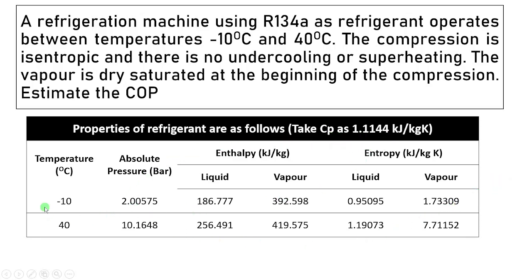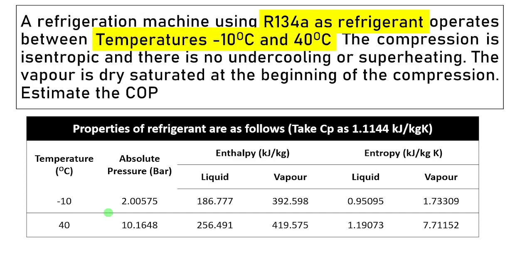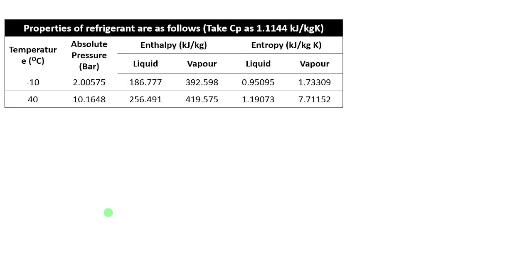You can see the property table is given for minus 10 degree centigrade and 40 degree centigrade temperature. Let's try to solve this numerical first analytically and then we'll try to solve it by using CoolPack software. So our given data is R134A as a refrigerant and temperature values are minus 10 degree centigrade and 40 degree centigrade.